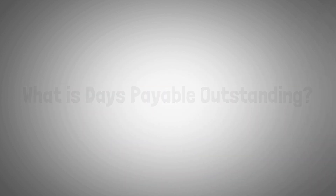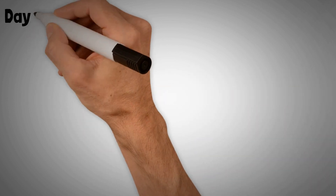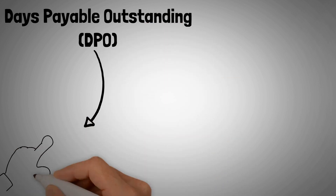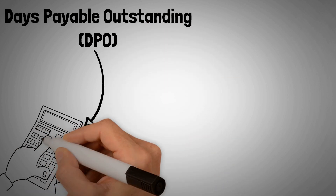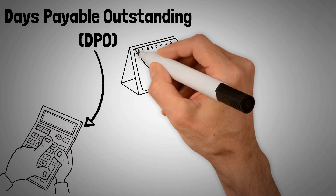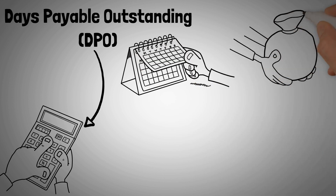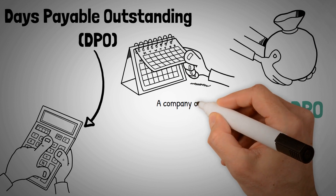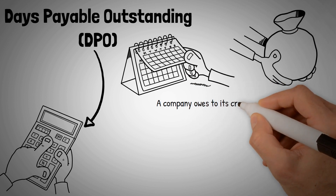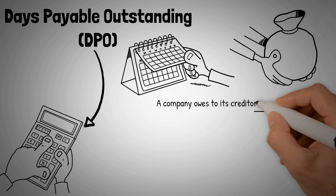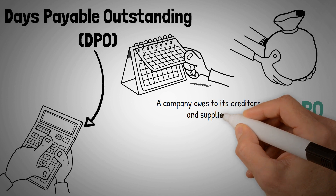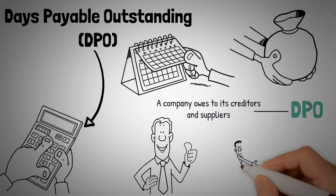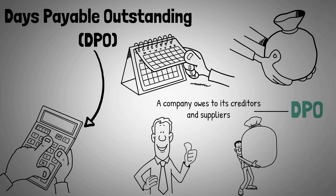What is Days Payable Outstanding? Days Payable Outstanding, DPO, is a financial metric used to calculate, on average, how many days a company is taking to pay its suppliers. DPO is a useful indicator of a company's health. Accounts Payable refers to the amount of money that a company owes to its creditors and suppliers. Days Payable Outstanding is an important metric that often informs decisions regarding accounts payable.